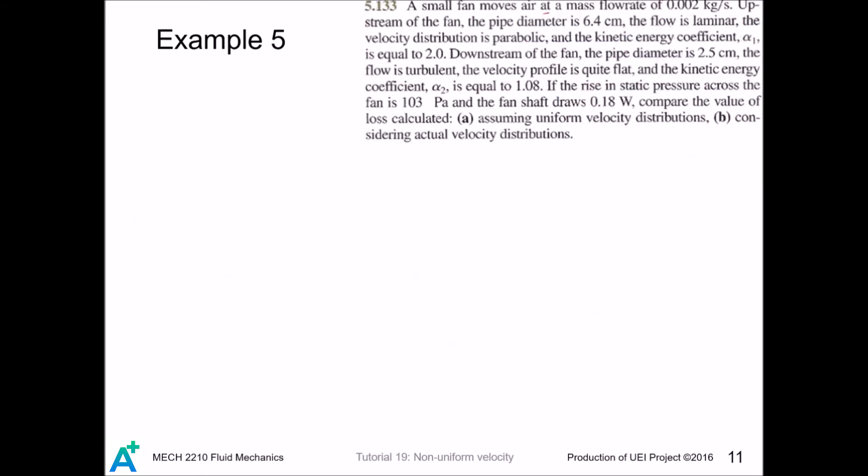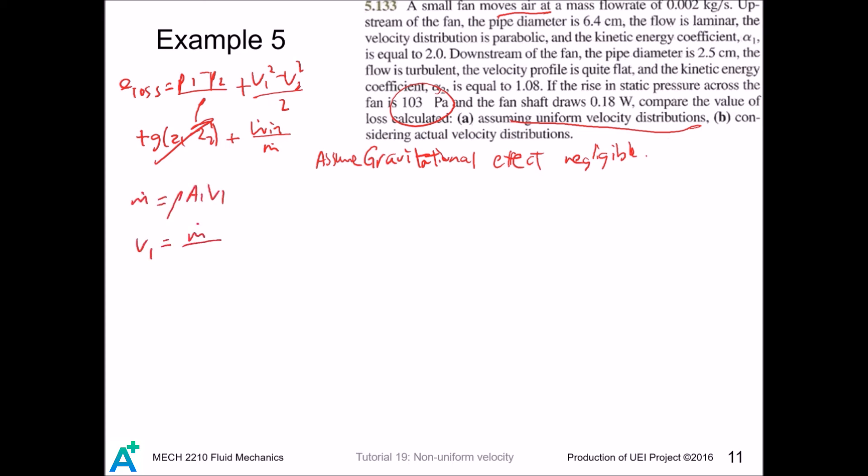Then we look at our final example. Although the fluid is air, the change in pressure is just a small value. So we can assume an incompressible flow. And then we first assume uniform velocity distribution. So we have our original mechanical energy equation. And we further assume that the gravitation effects are negligible, so this term goes out. And mass flow rate equals rho a v. And for velocity 2... So we can plug in all the values.